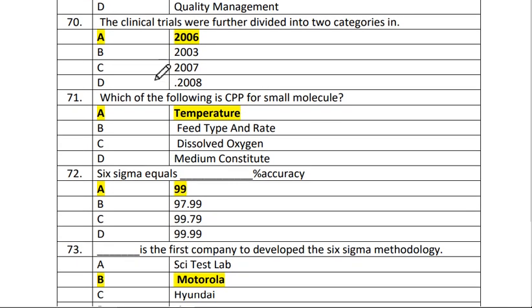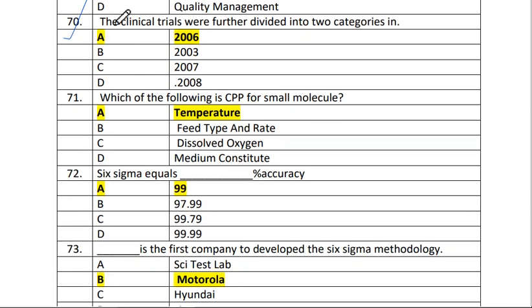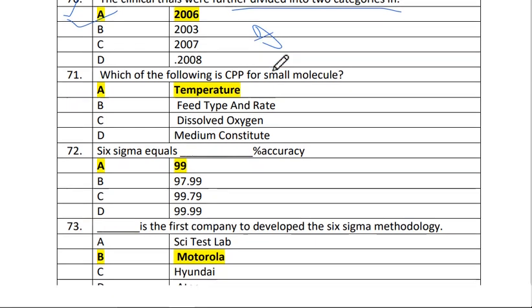Next is question number 72. The clinical trials were further divided into two categories in 2006. The answer is A, 2006.